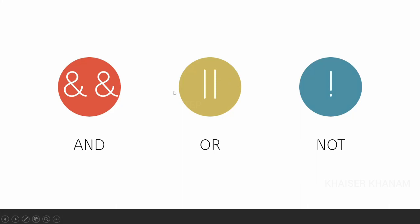Basically we are having three logical operators: AND, OR, and NOT. We will be writing AND as the && symbol, OR as the double pipe symbol, and NOT as the ! symbol. Using AND and OR we can compare multiple conditions, but using NOT it is just going to return the opposite result — if I give true it will return false, if I give false it will give true.